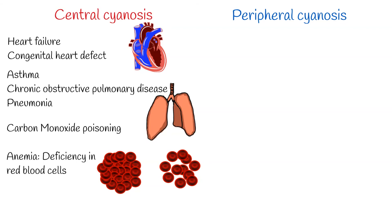Anemia, or a deficiency in red blood cells, can cause central cyanosis by reducing the amount of oxygen that is carried in the blood. A blood clot in the lungs, also known as a pulmonary embolism, can cause central cyanosis by blocking the flow of oxygen-rich blood to the lungs.